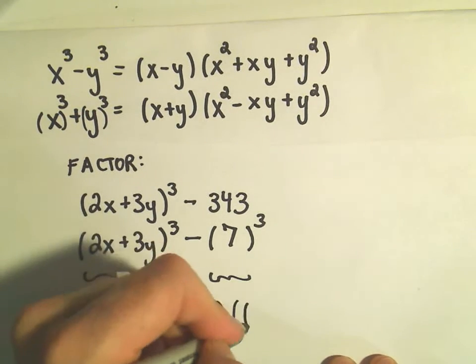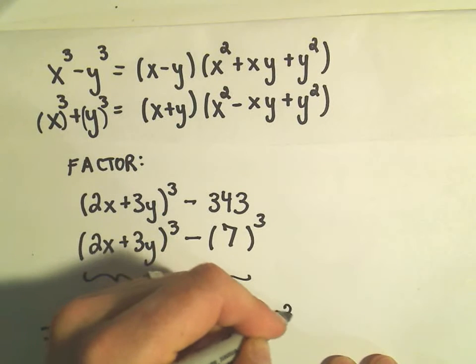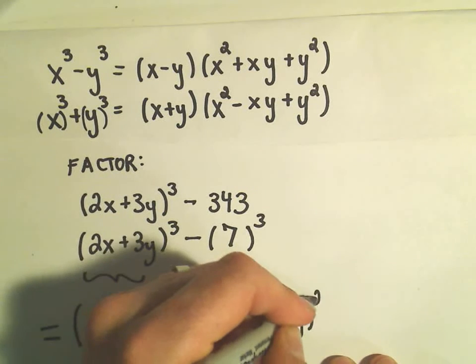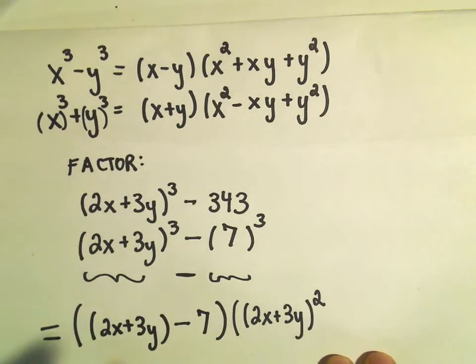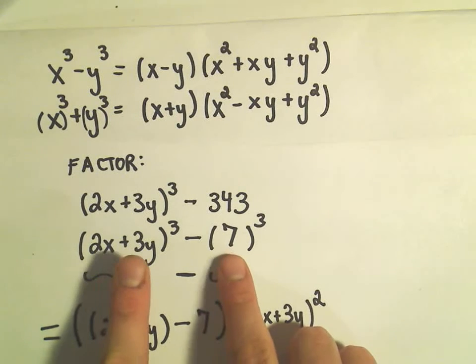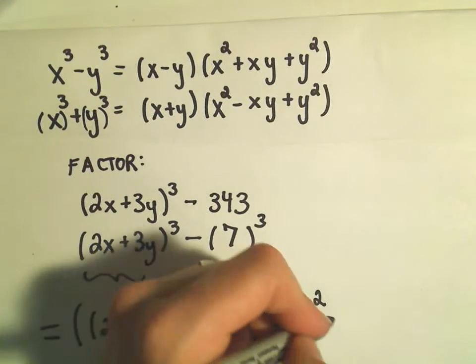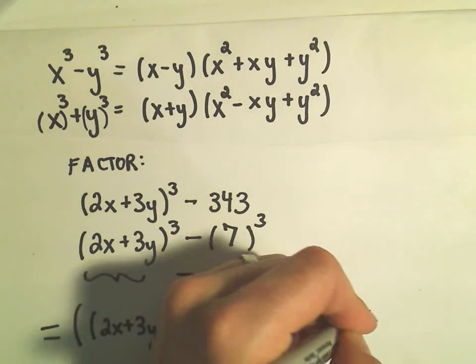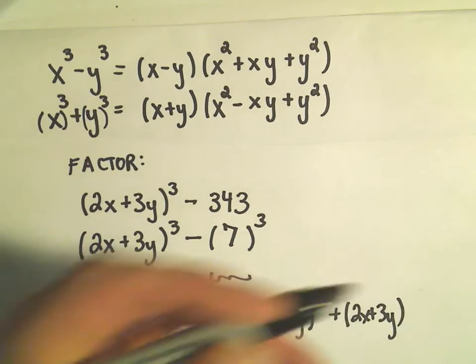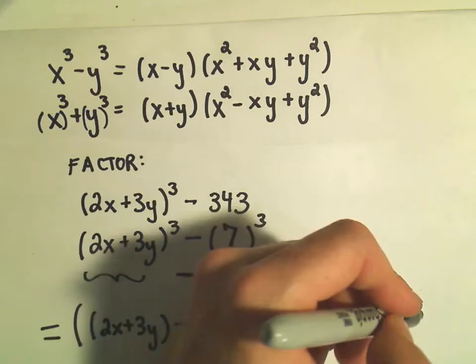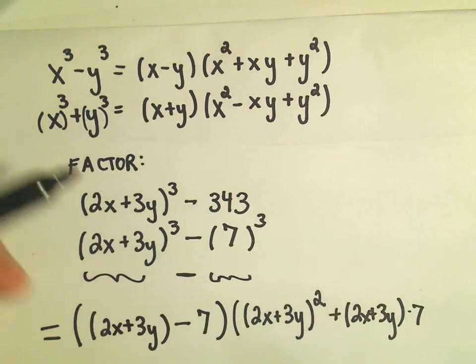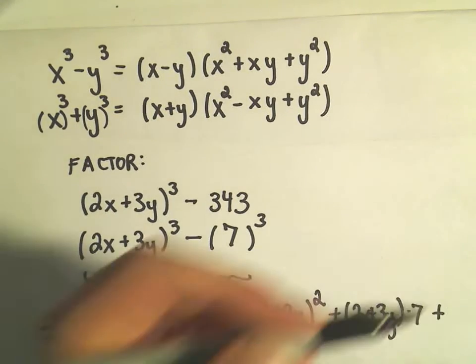Then it says take the first thing, the 2x plus 3y in this case, and we square it. Then it says whatever was being raised to the powers, multiply those two things together. So now we'll have 2x plus 3y, we would have to multiply that by 7.